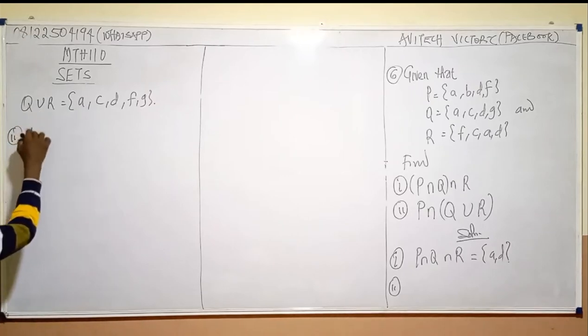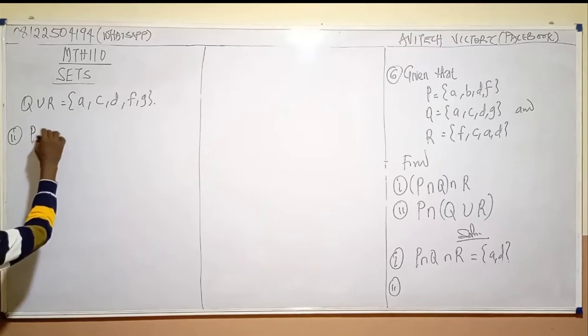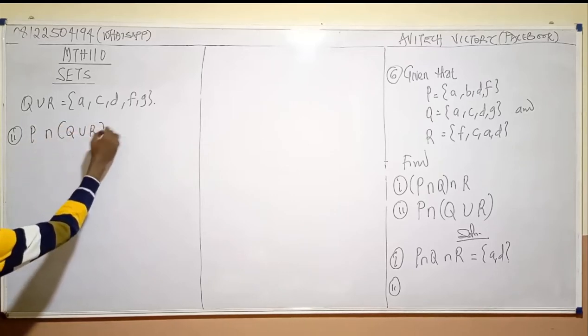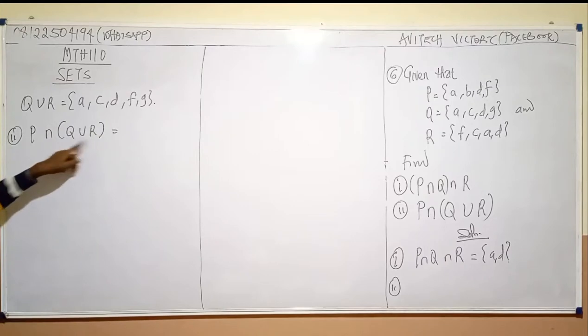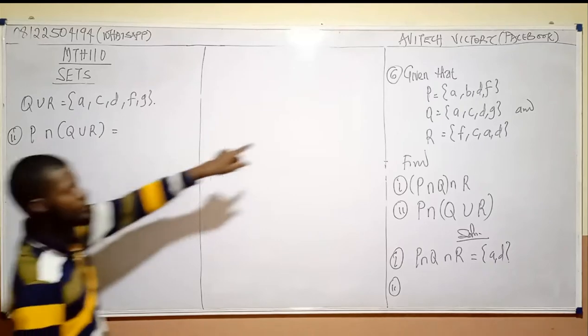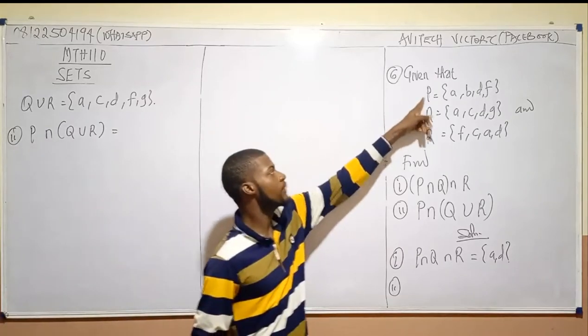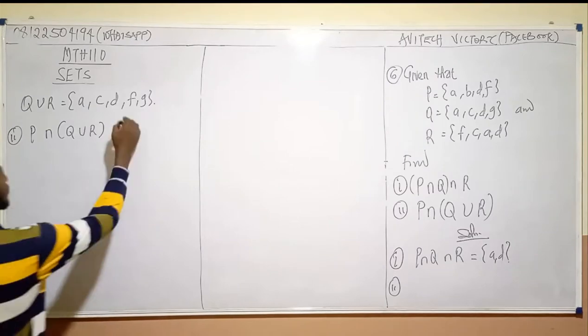And finally, number two says P intersection Q union R. So we'll go through our Q union R and we'll have our P. What does intersection mean? What do you see that is common between P? This is our P. What do you think is common between P and these are our answers? What are the elements in common between them?